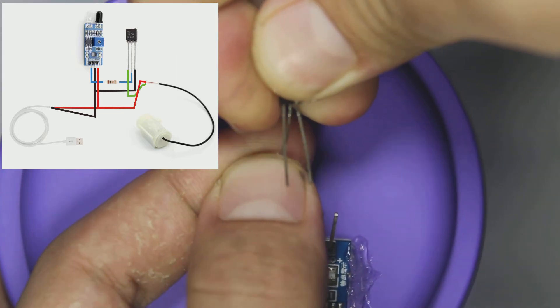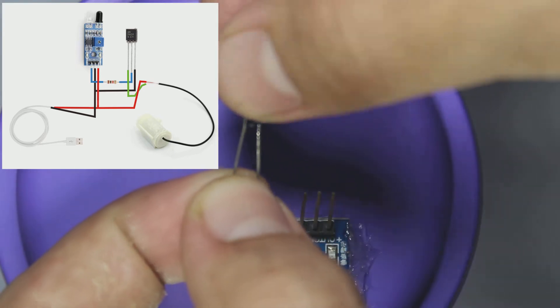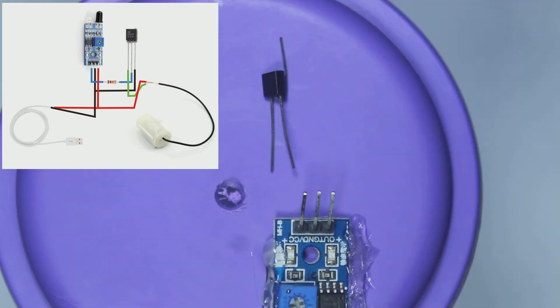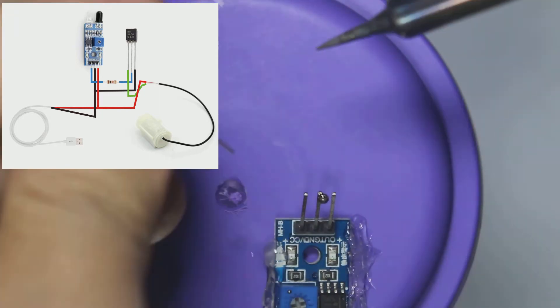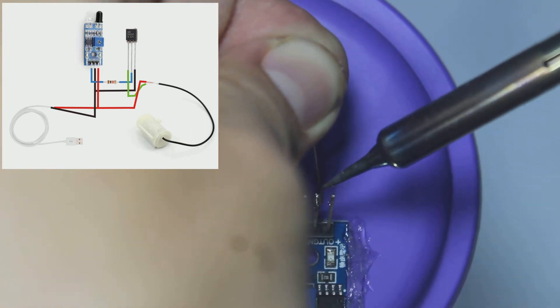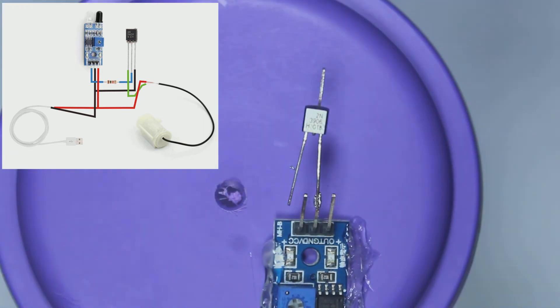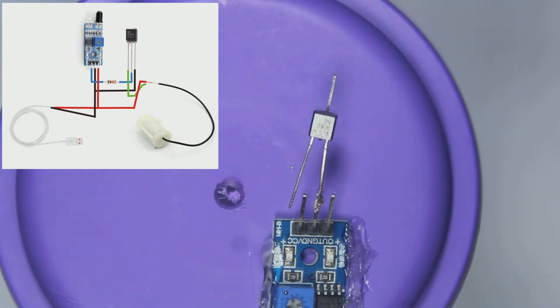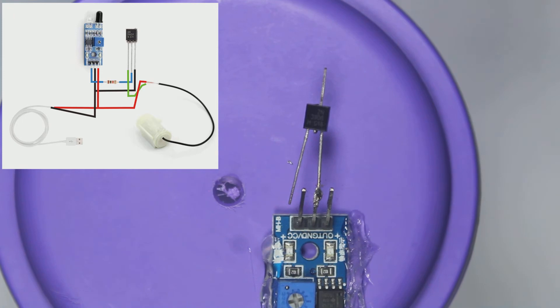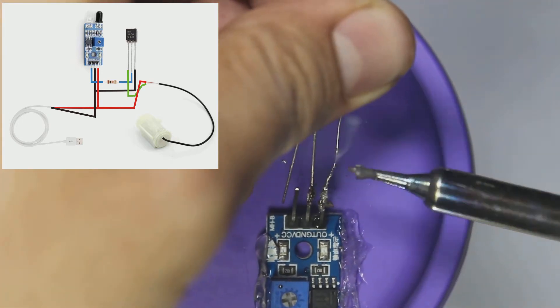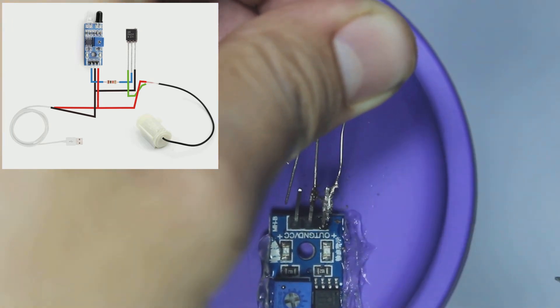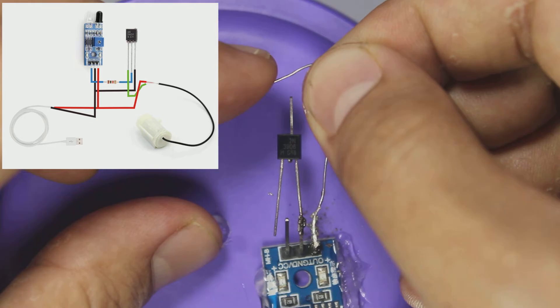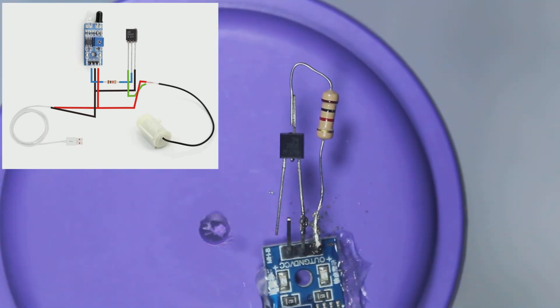Now solder the transistor emitter pin to ground of the sensor module. Then solder resistor to out pin of sensor module. Solder the resistor to transistor base pin.